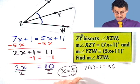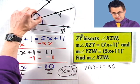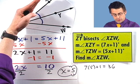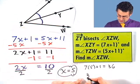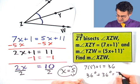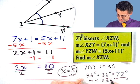And so what do I do now? I know that this ray was the angle bisector. So if this is 36 degrees, then this angle is 36 degrees. Therefore, the entire angle is going to be 36 degrees plus 36 degrees, or 72 degrees. That equals the measure of angle X, Z, W.